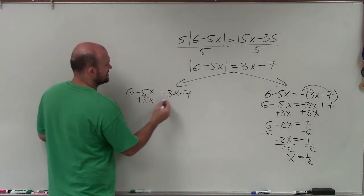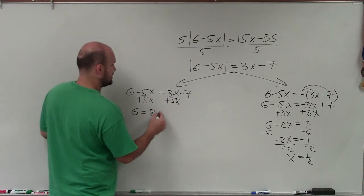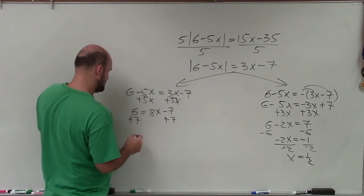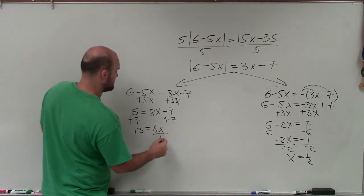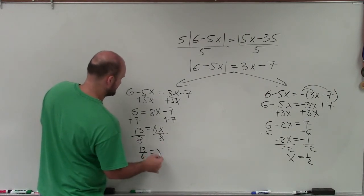Here, again, I just want to get the x's to the same side. So I'll add 5x to both sides. So I have 6 equals 8x minus 7. Add 7. And here I have 13 equals 8x. Divide by 8. 13 over 8 equals x.